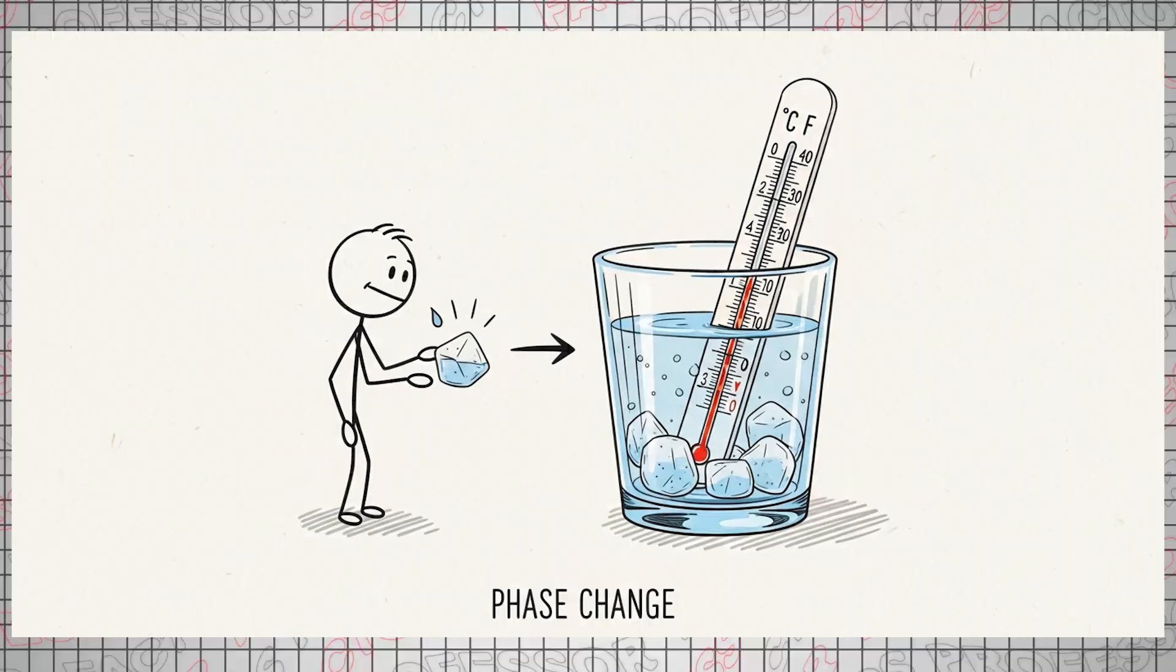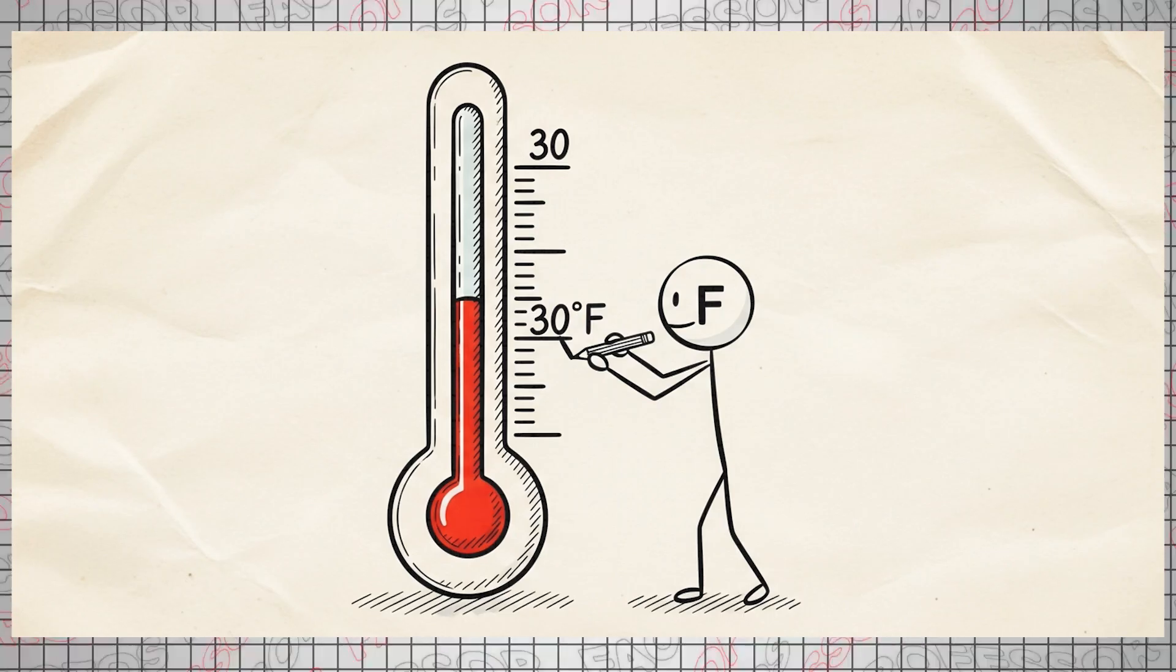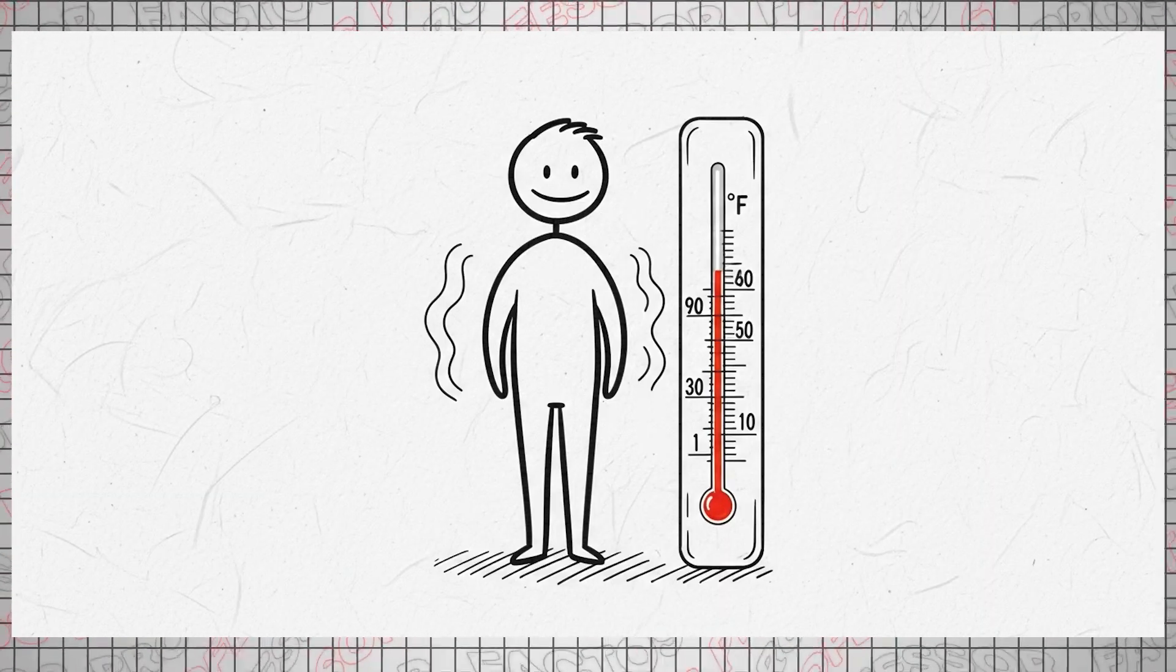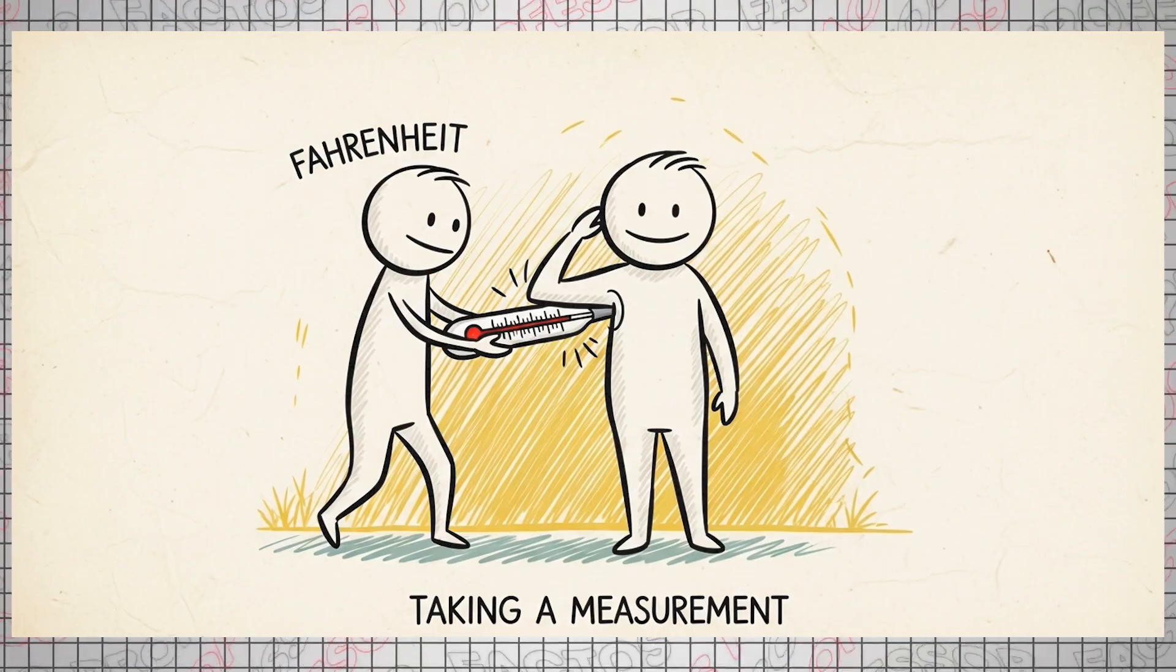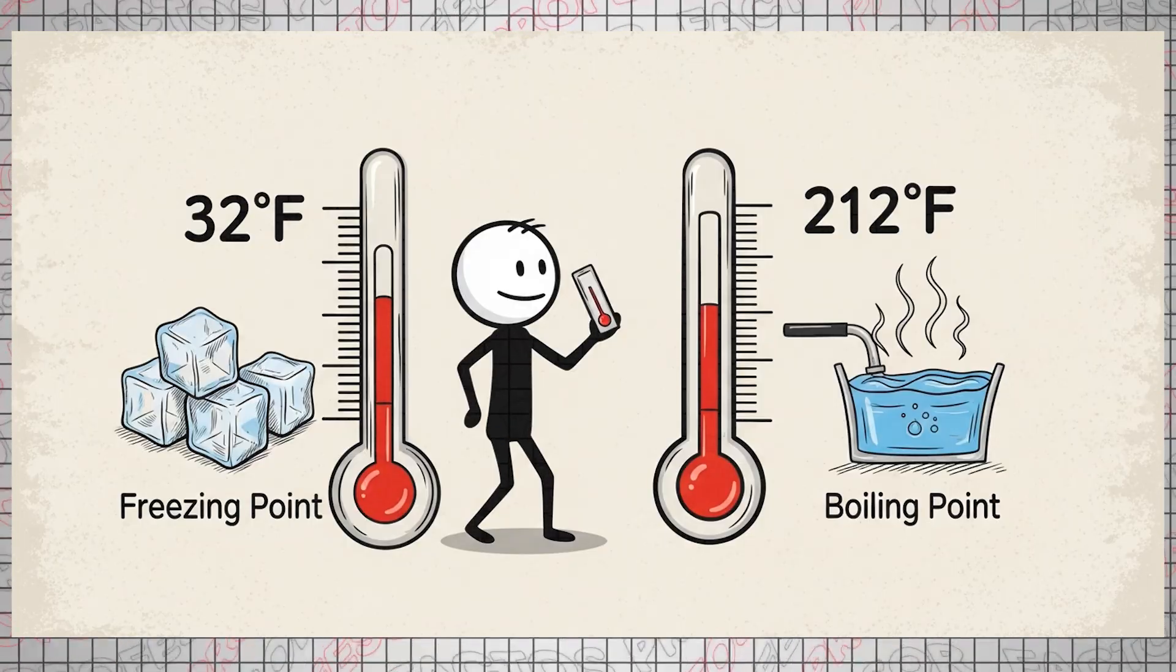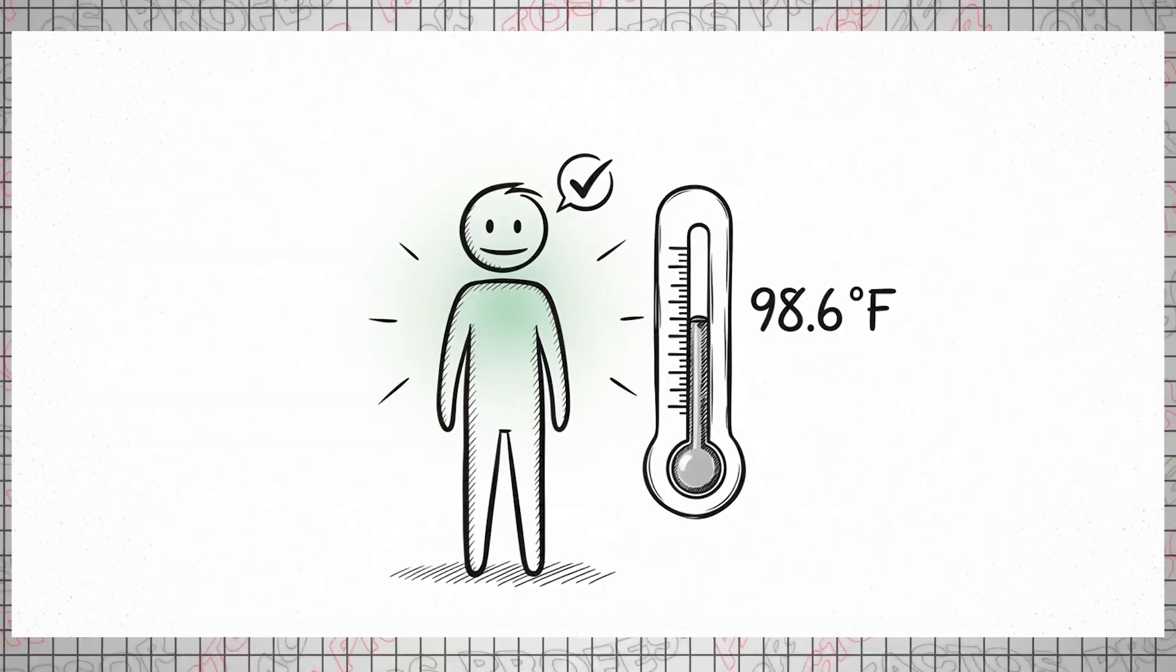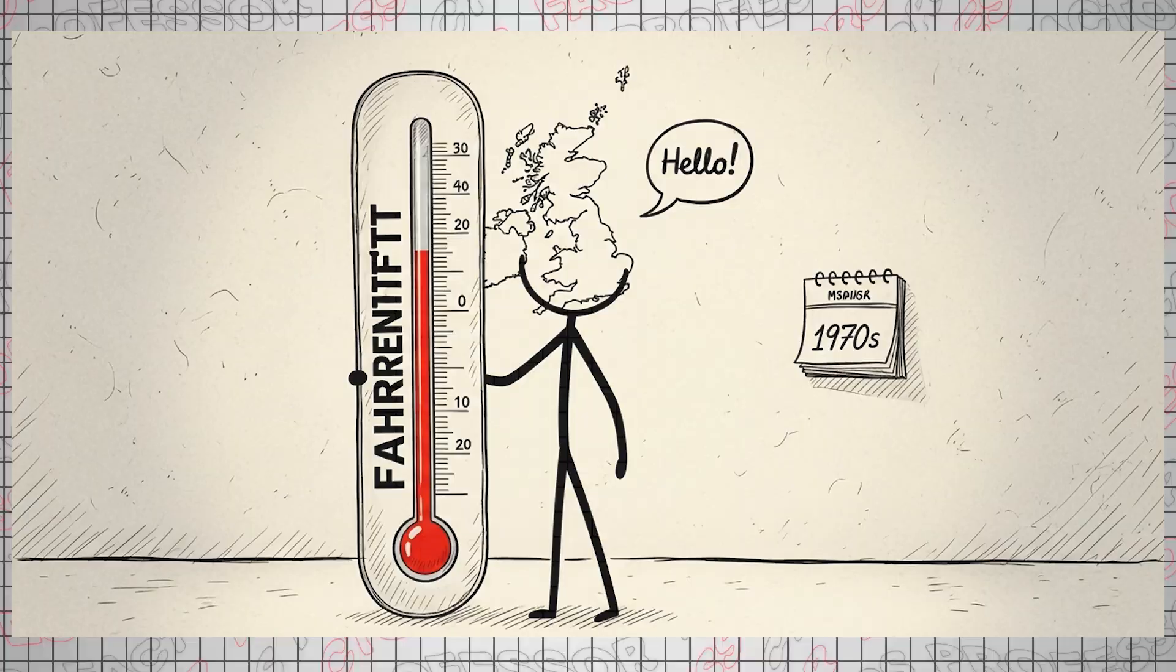At the lowest point the thermometer registered, Fahrenheit set 0 degrees Fahrenheit as his benchmark. The second reference point was the temperature at which water just froze, which Fahrenheit designated as 30 degrees Fahrenheit. The third calibration point, 90 degrees Fahrenheit, was defined as the normal human body temperature, measured by placing the thermometer in the armpit or mouth. Today, on the Fahrenheit Scale, water freezes at 32 degrees Fahrenheit and boils at 212 degrees Fahrenheit, while normal human body temperature is considered 98.6 degrees Fahrenheit.